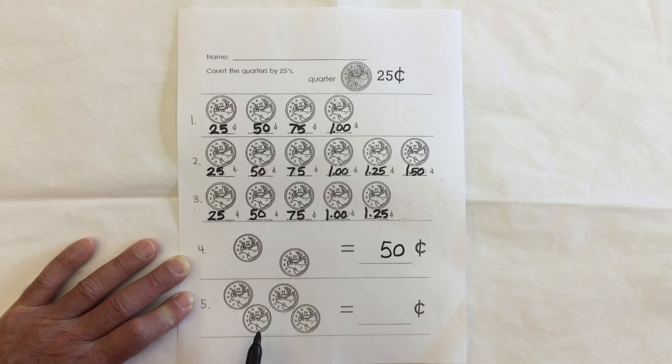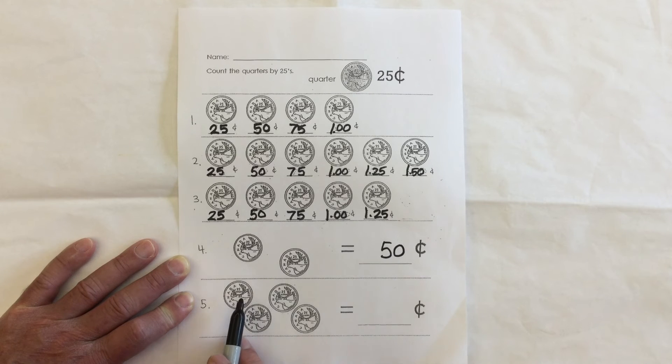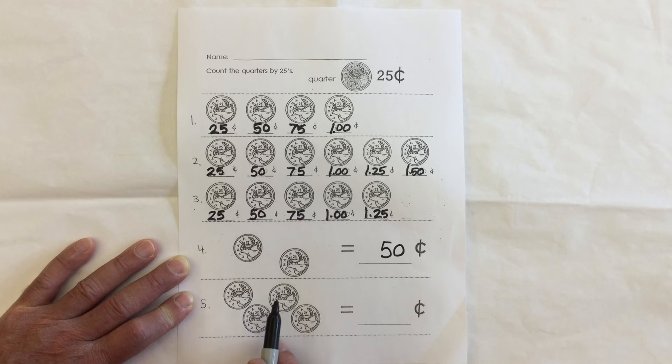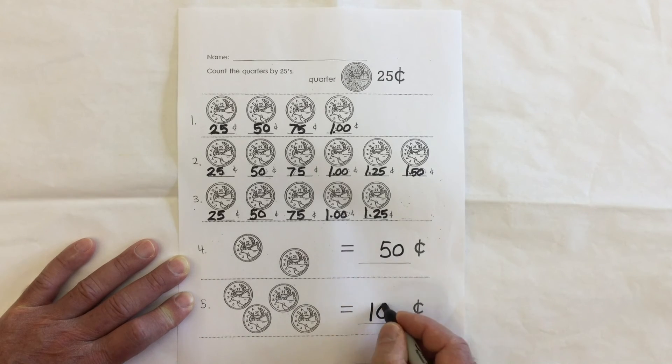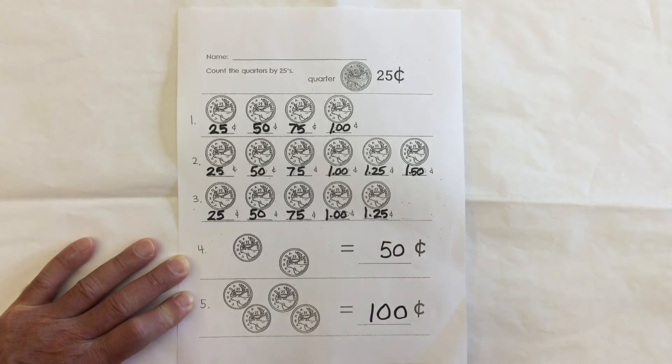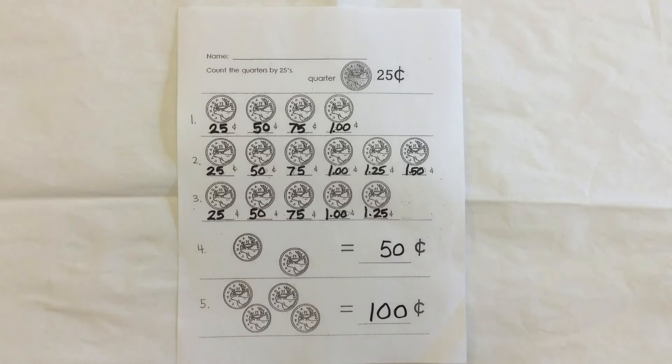And let's count what we have here. We have four quarters, that's going to be 100 cents or one dollar. So 25, 50, 75, 100. 100 cents. And that's counting by quarters.